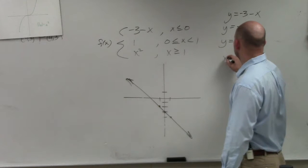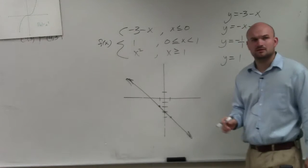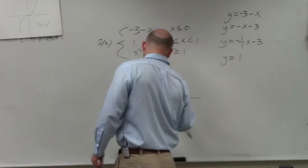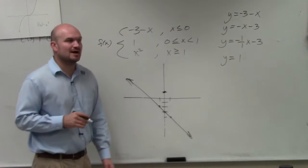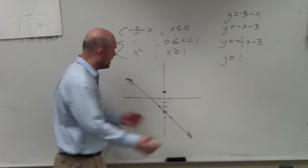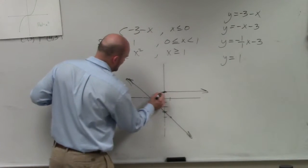Then we have a number. Well, how do you graph a number? y equals 1. Well, what does y equal? 1. When x equals 5, what does y equal? When x equals negative 10, what does y equal? 1. y always equals 1. That's a horizontal line.